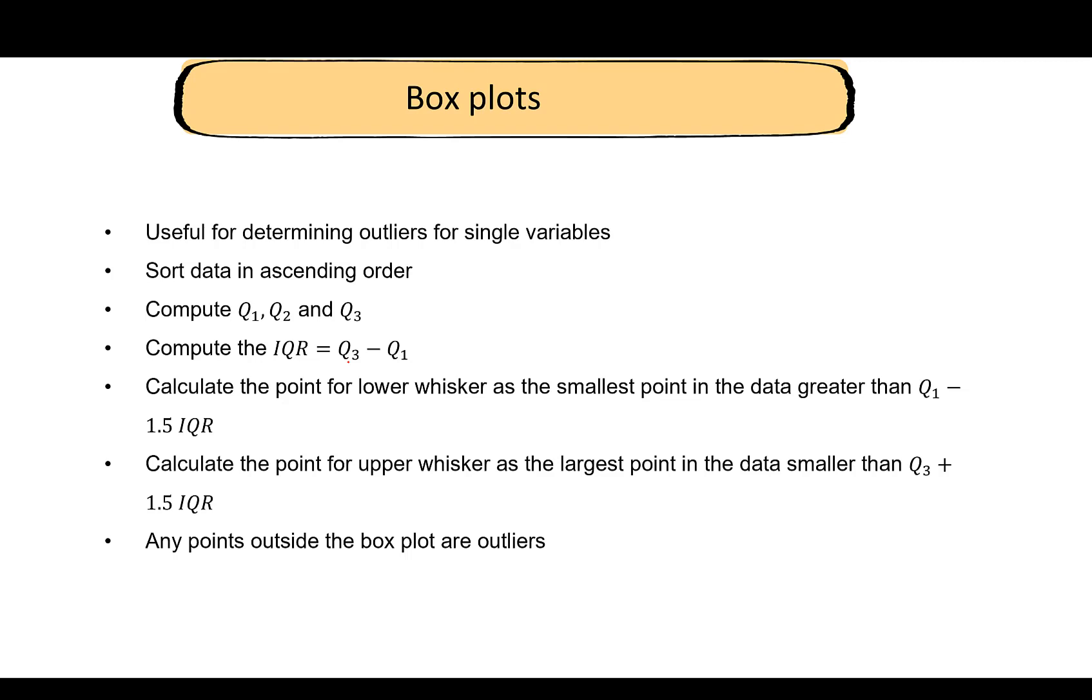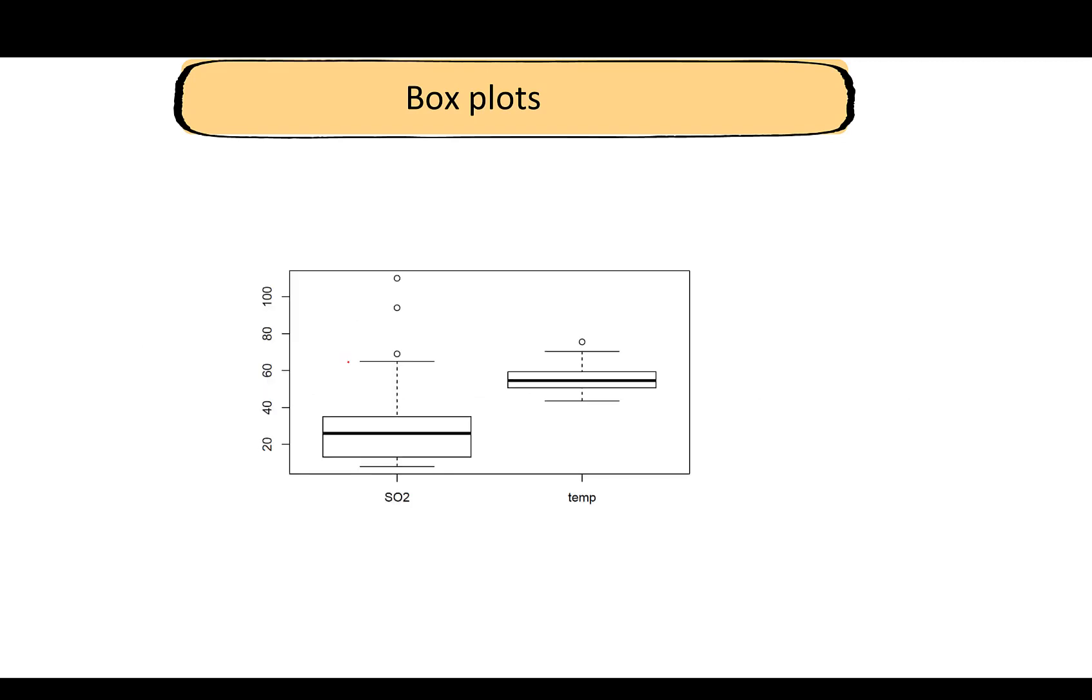This is how box plots look like. This is again from the US air pollution data set. For the SO2 levels, there are three points outside the box plot. These are outliers. For temperature, there is one point that can be considered to be an outlier.